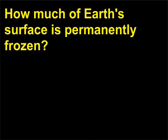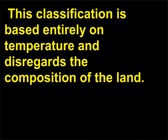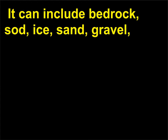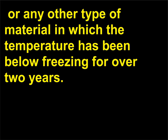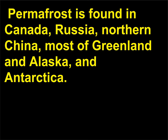How much of Earth's surface is permanently frozen? About one-fifth of Earth's land is permafrost, or ground that is permanently frozen. This classification is based entirely on temperature and disregards the composition of the land; it can include bedrock, sod, ice, sand, or gravel — any material in which the temperature has been below freezing for over two years. Nearly all permafrost is thousands of years old. Permafrost is found in Canada, Russia, northern China, most of Greenland and Alaska, and Antarctica.